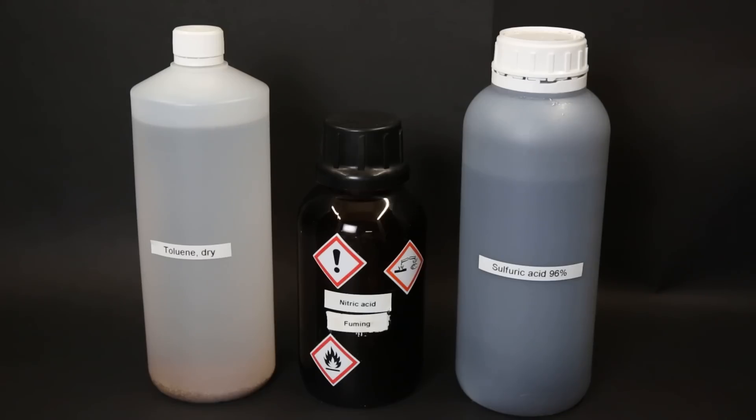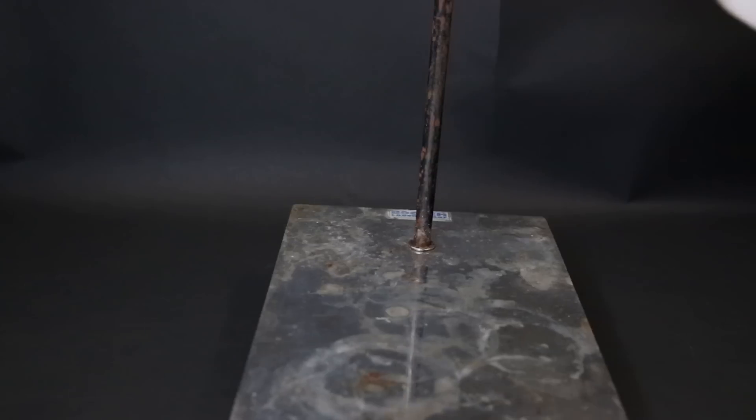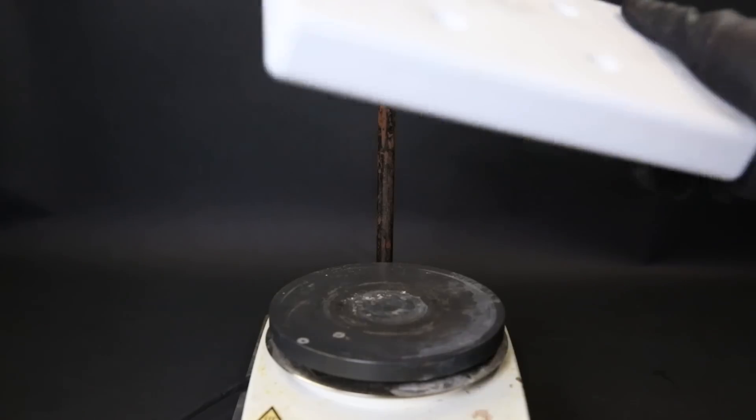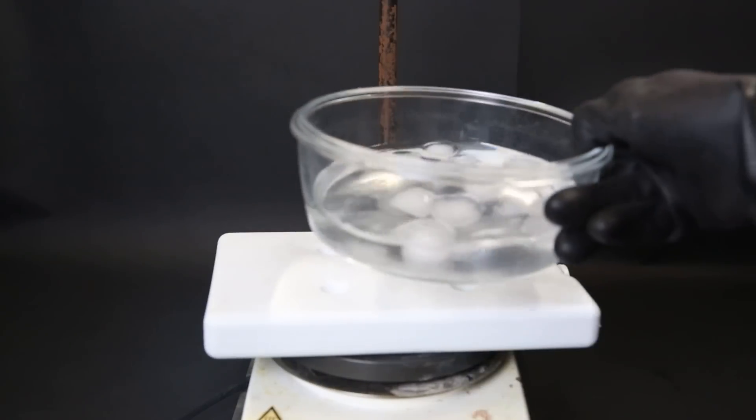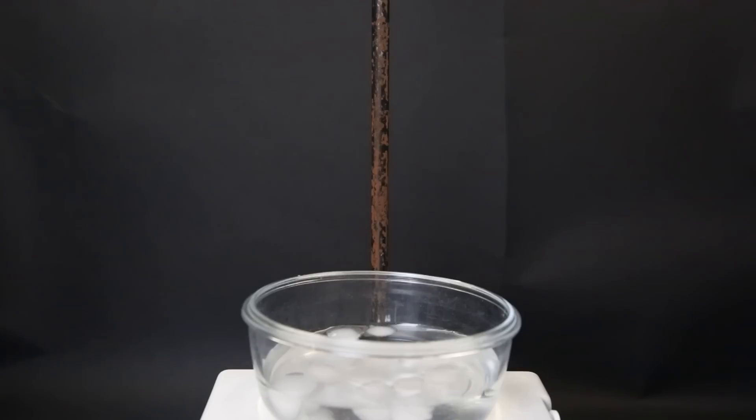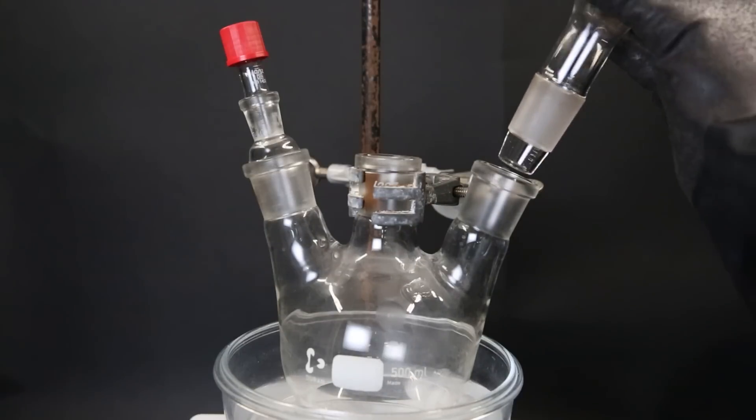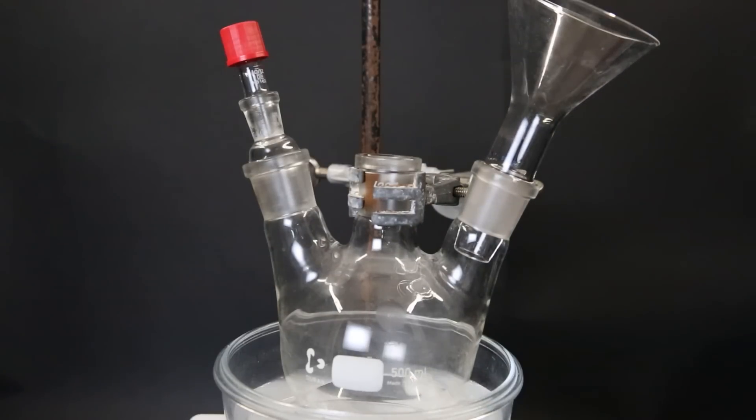To start off, I need to do a mononitration of toluene in the para position. To do this, I will need 96% sulfuric acid and 65% nitric acid. I set up a stir plate with an ice bath. For this reaction, it is important to keep the temperature below 10°C because above this temperature, the toluene will nitrate in multiple positions. So I set up a thermometer adapter.